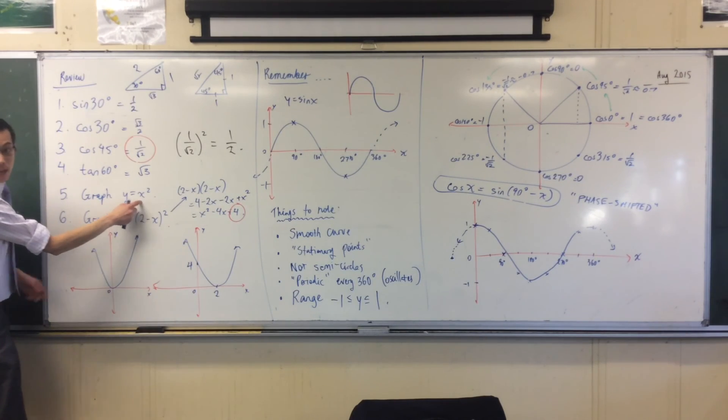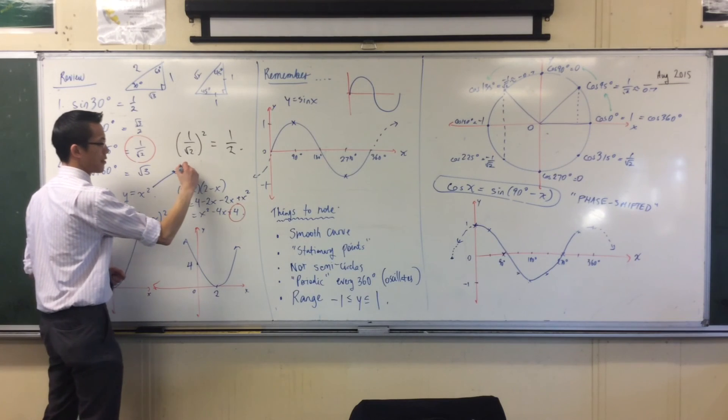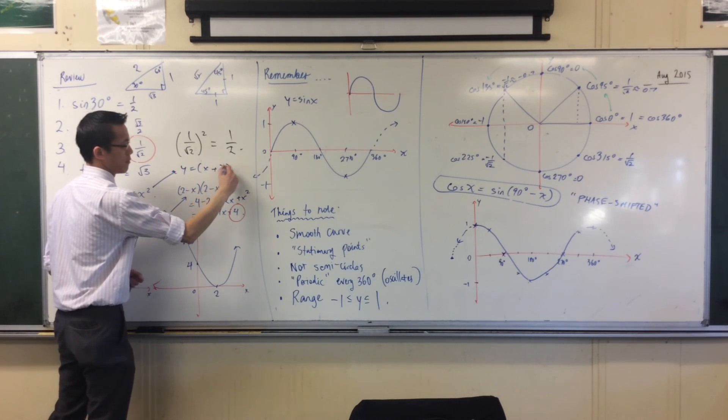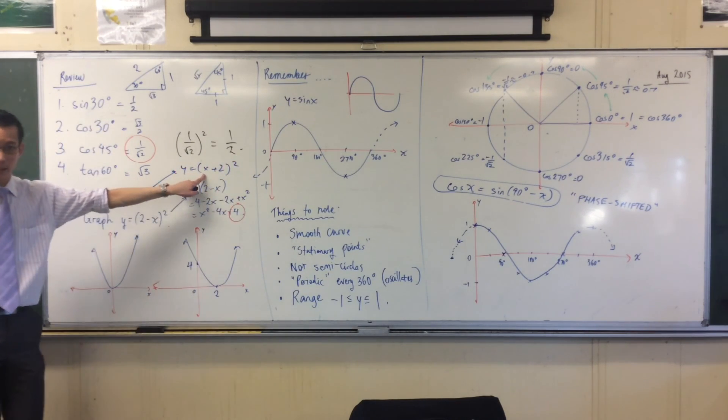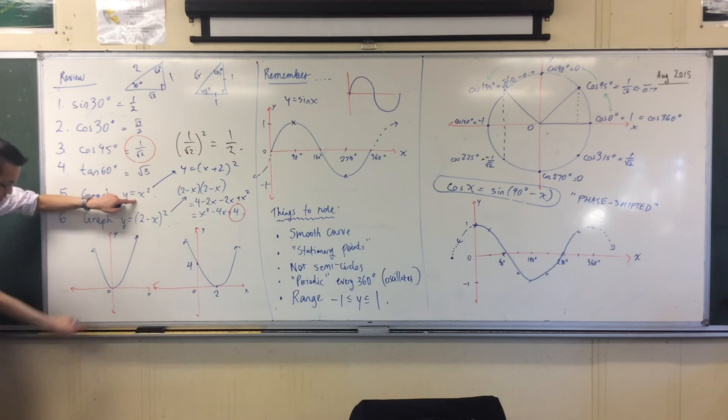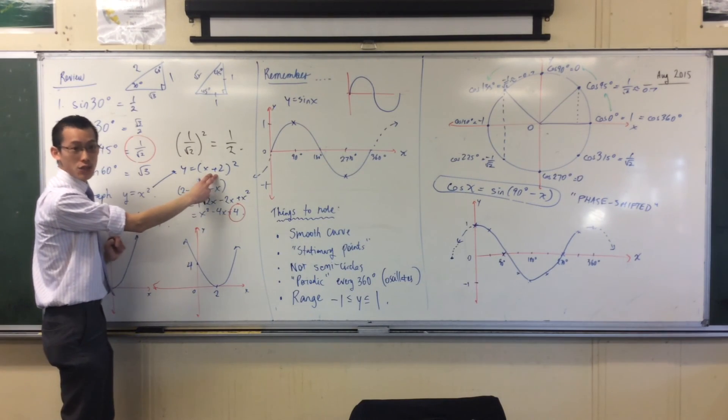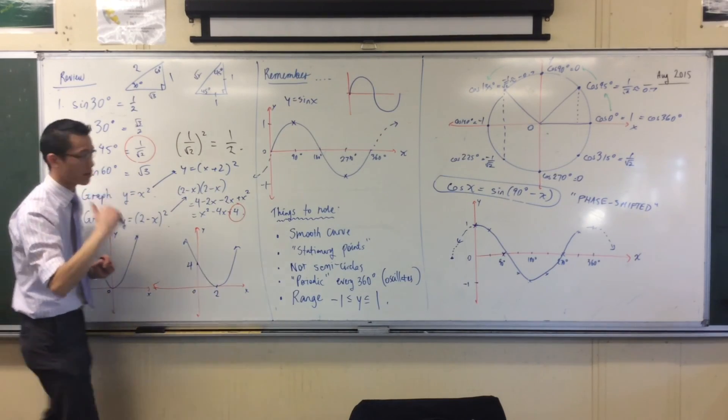For example, if I wanted to move this guy to the left, I'd write this. This is exactly the same as this. But instead of having a root at the origin, it'll have it at negative 2, which is to the left.